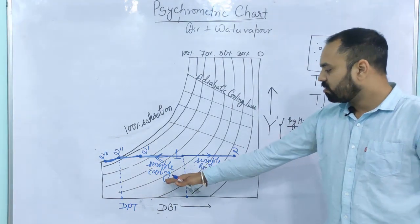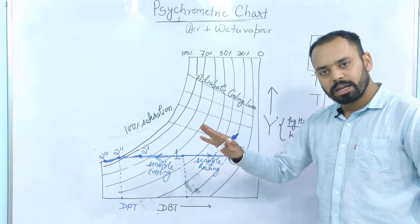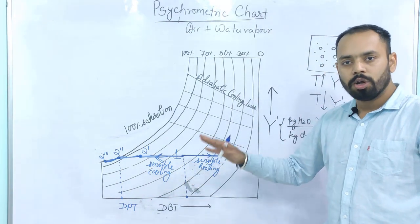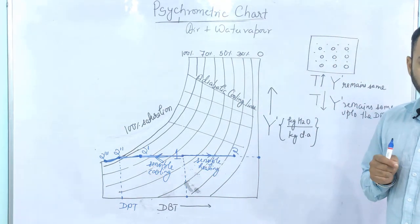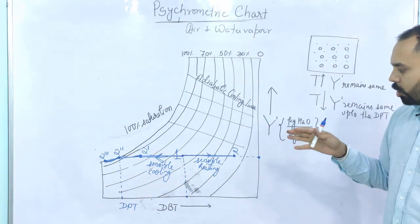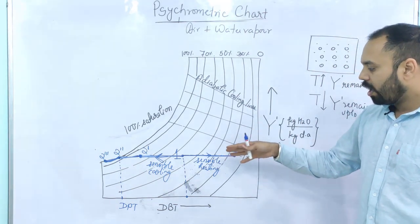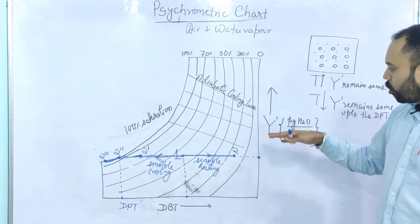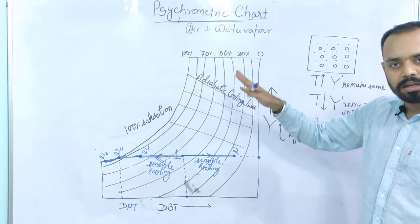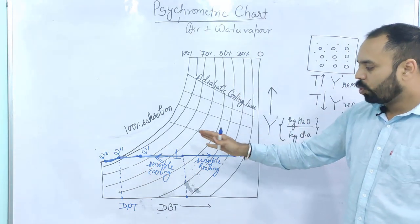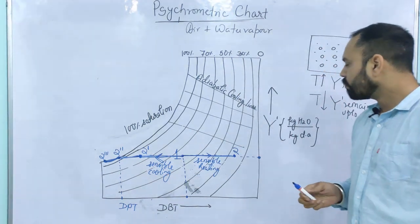So in any sensible heating or sensible cooling process, neither humidification nor dehumidification takes place. The concept of sensible heating and cooling and its effect on Y' and relative humidity is clear, and you also know how to locate the dew point temperature.